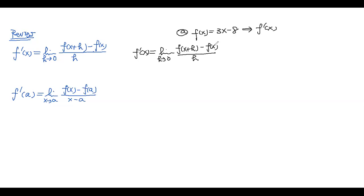You will see from problem to problem it's almost the same way — some are more tedious, some are not. Plug it into formula number one: this is the limit as h approaches zero of [f(x+h) − f(x)] / h. Replace x with x+h, so this is 3(x+h) minus [3x − a]. Be careful about the negative signs — put them in parentheses.